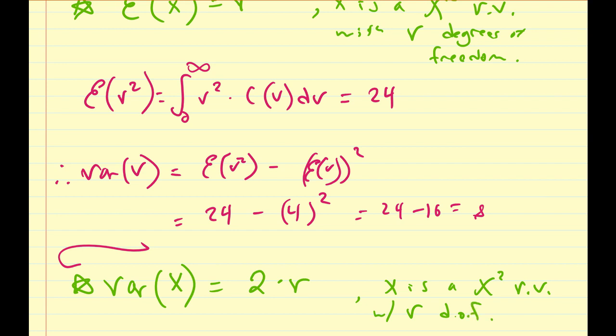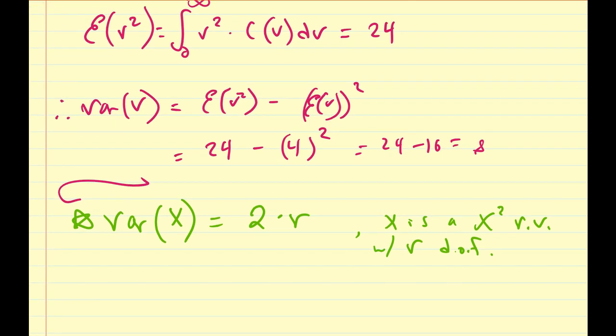So the expected value for a chi-square random variable is always equal to the degrees of freedom, and the variance is 2 times that degrees of freedom as well. That's pretty much a summary of the chi-square distribution, a couple of its properties, and also how to use it.